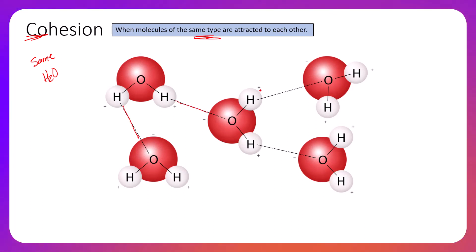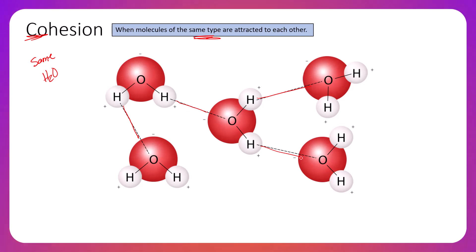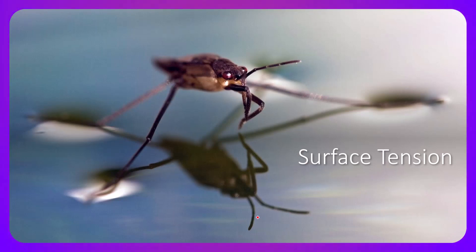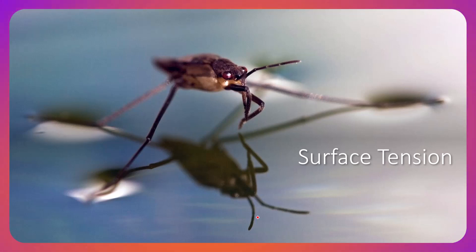Each water molecule has a positive and a negative pole and forms its hydrogen bonds with adjacent water molecules, continuing to form these hydrogen bonds pretty much indefinitely as long as there are water molecules available. Cohesion is the result of this polarity forming hydrogen bonds between the slightly positive and slightly negative ends of these water molecules. One of the most important properties this gives rise to, for organisms in aquatic ecosystems, is surface tension.